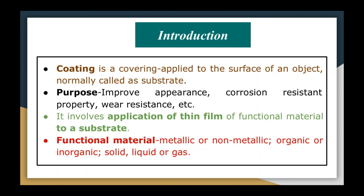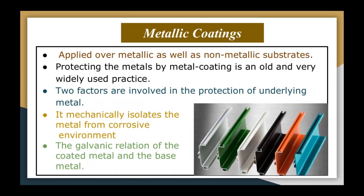These are the types of coatings, and today we are going to discuss metallic coatings. Metallic coatings can be applied over metallic as well as non-metallic substrates — sometimes non-metallic materials like plastics are coated with metallic coatings to give a metallic appearance. Protecting metal by metal coating is an old and very widely used practice, as these coatings are more durable, more decorative, and provide better protection against corrosion. There are two factors involved in this protection.